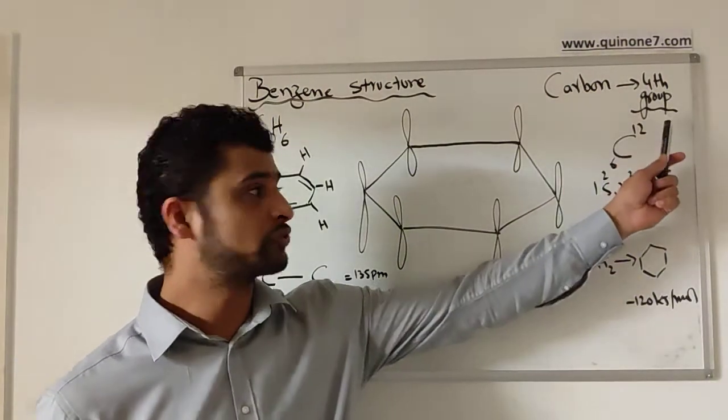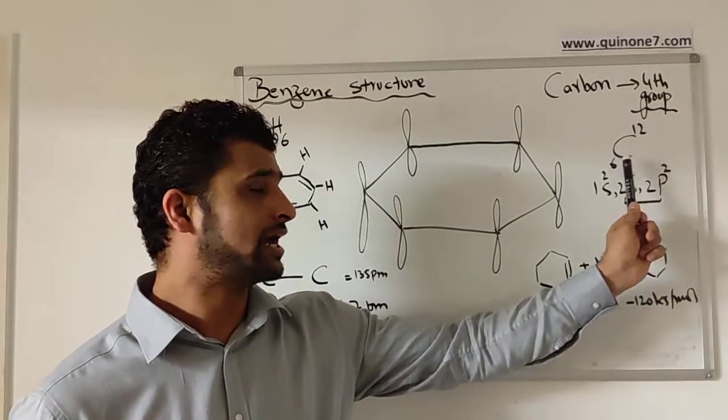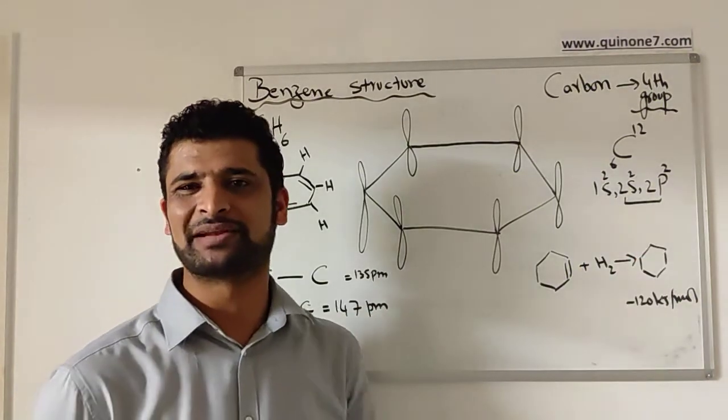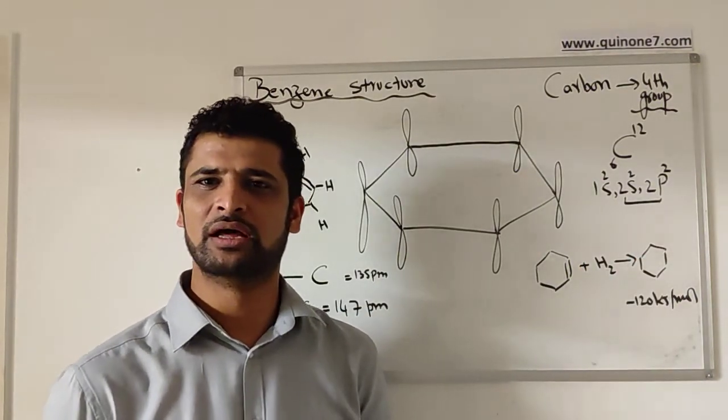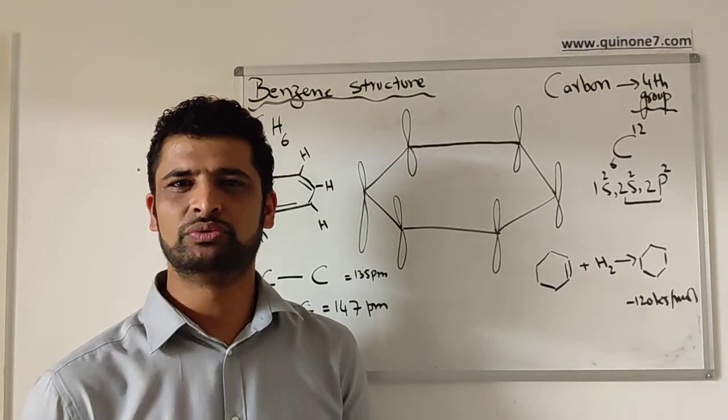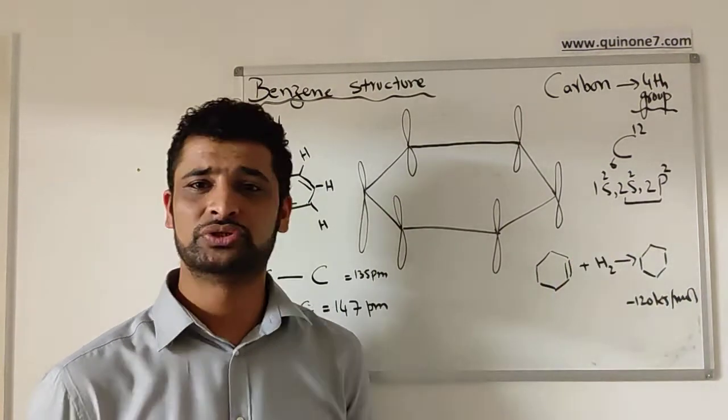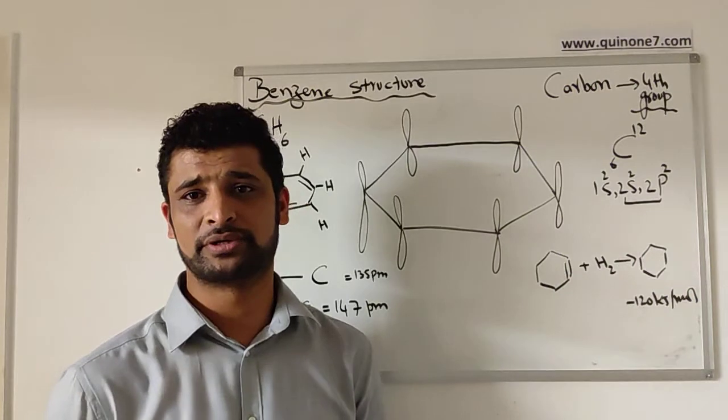Carbon belongs to the fourth group so it has electronic configuration of 1s2, 2s2, 2p2. That means it has got four electrons in the outer shell where two are in the 2s orbital and two are present in the 2p orbital.